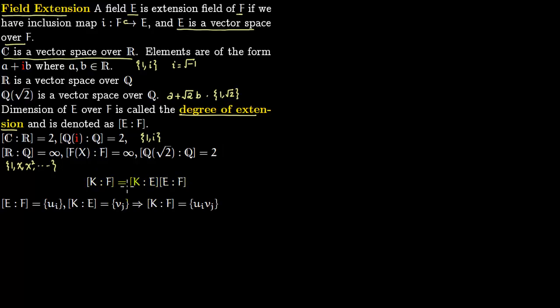Now the multiplicative property of degree of extensions. Say K is extension field over F. Then [K:E]·[E:F] = [K:F]. The way we write it: you have a base field F and you have an extension field K. Now you have an intermediate field E. You have F, you go to E, and then from E you go to K.